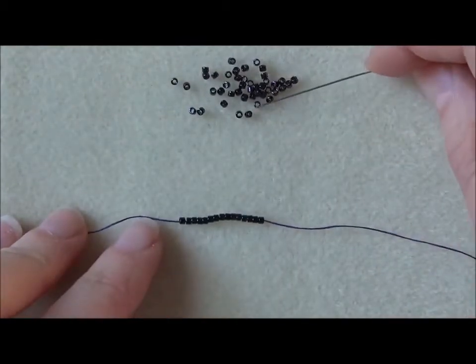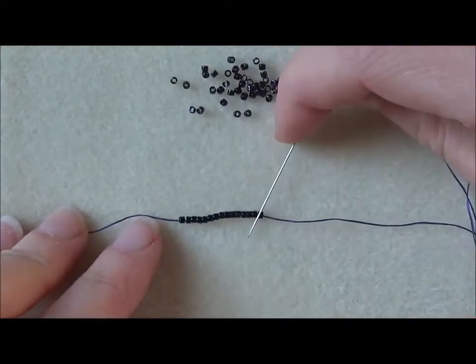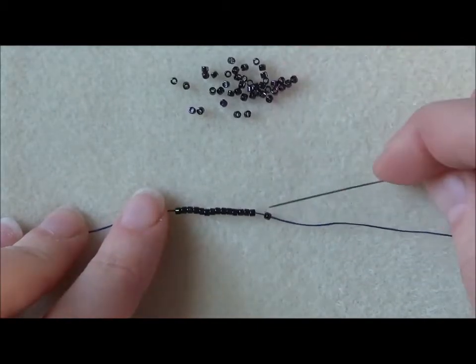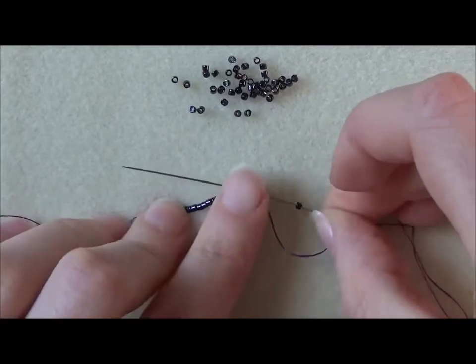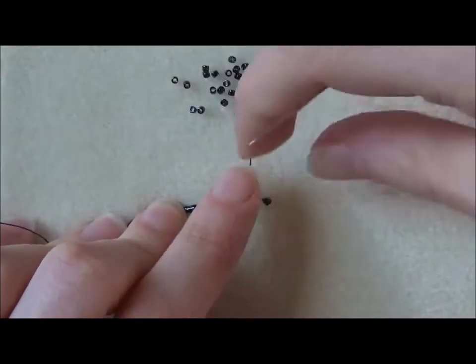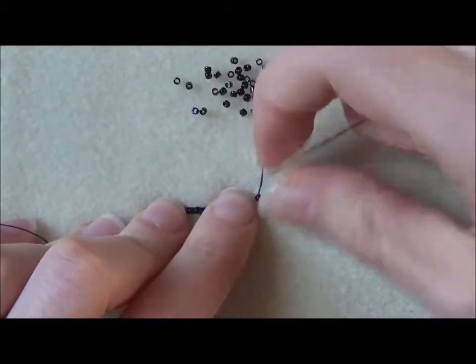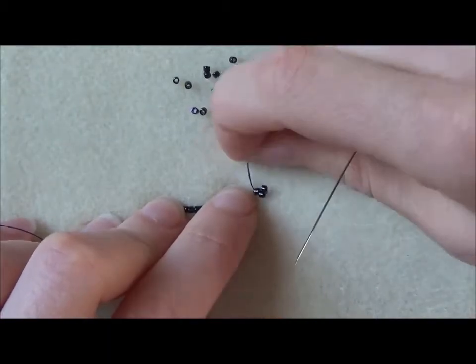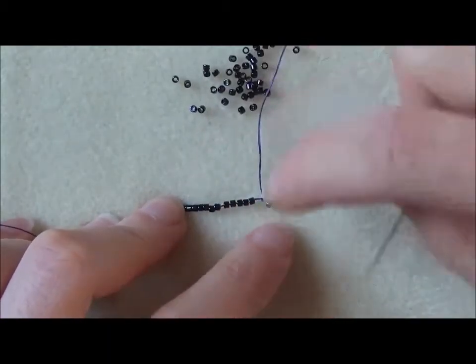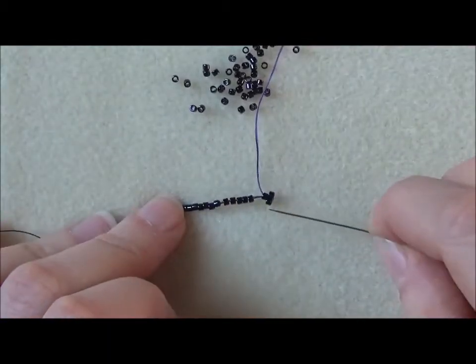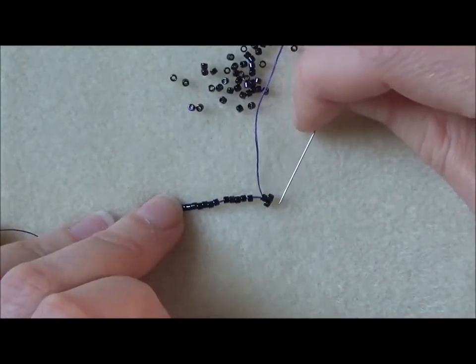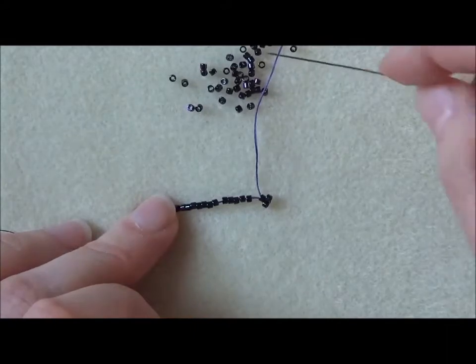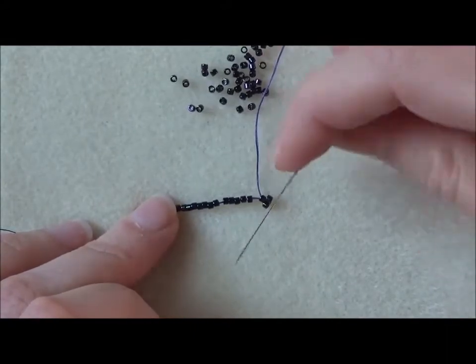I'm going to pick one bead up, slide a bead out of the way, and go through the next bead on my thread. Pin that down, pull that up. Those first few beads, the first two sit on top of one another and the next bead forms like a small triangle. Now I'm going to pick up my next bead, slide one along, go through the next.